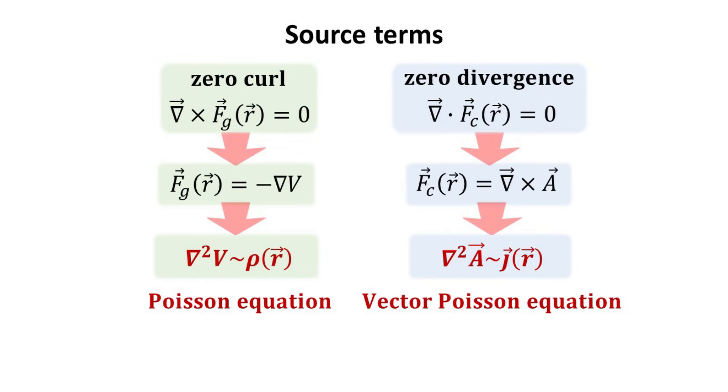In summary, the Poisson and vector Poisson equations allow for an elegant way of expressing the scalar and vector potentials in terms of the sources. Evidently, the Laplacian holds the key to our next discussion.